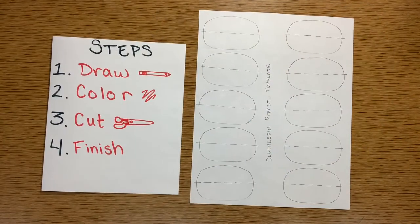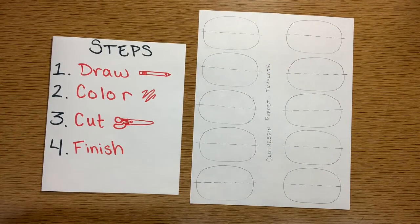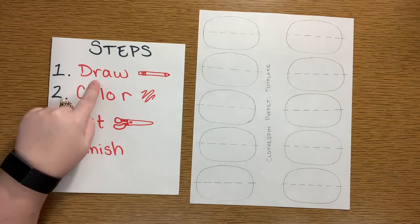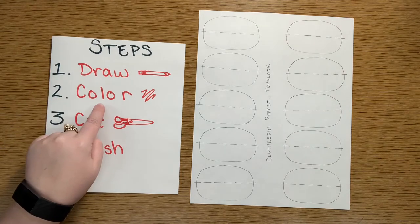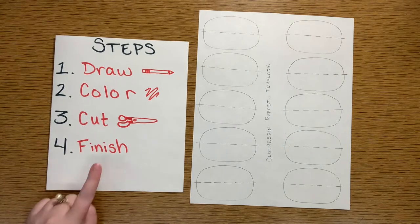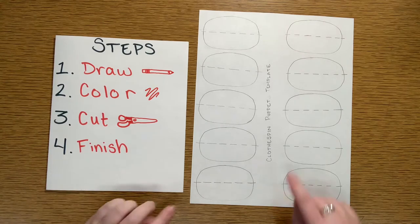Alright, so here are our steps for our clothespin puppet. First, we're going to draw, then we'll color. Step three is cut, and step four is finish.